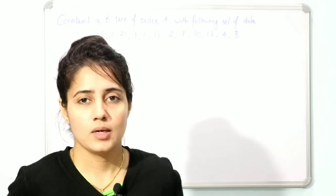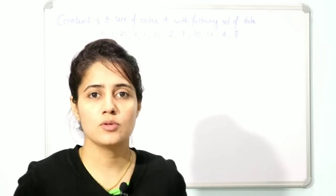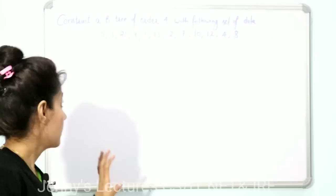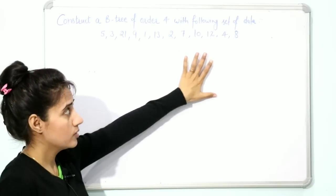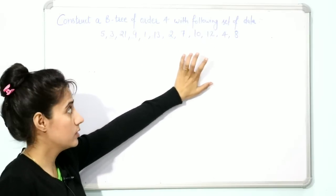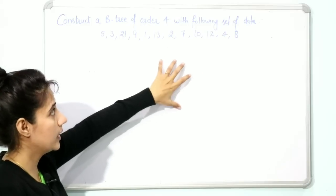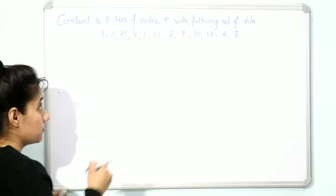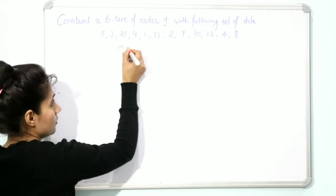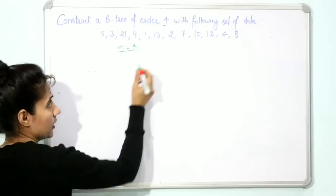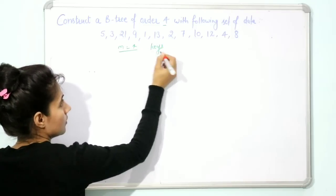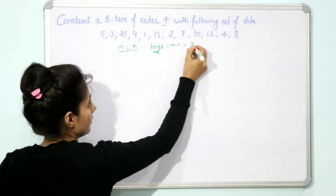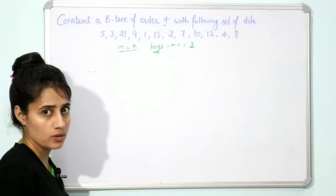Hi guys, welcome back to my channel. In this video I'm going to discuss how to construct a B-tree of order 4. The question is: construct a B-tree of order 4 with the following set of data. The order is 4 means m=4, so the maximum keys any node can have is m minus 1, that is 4 minus 1, which is 3.